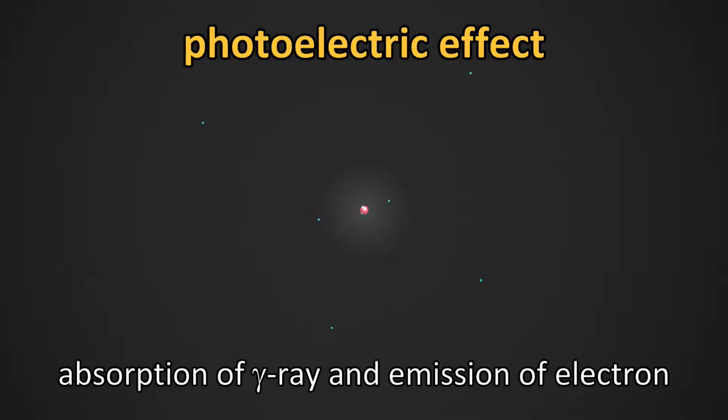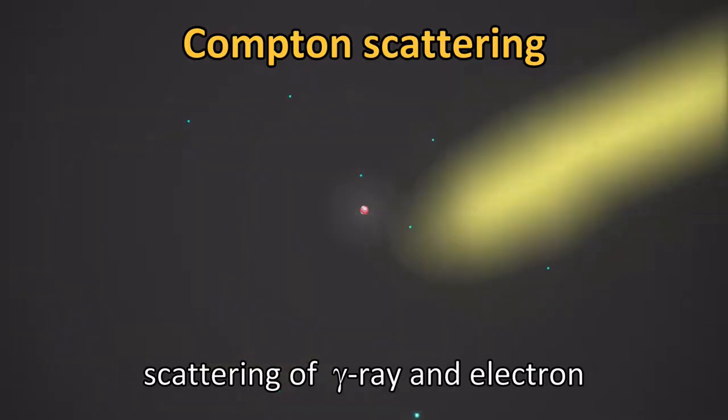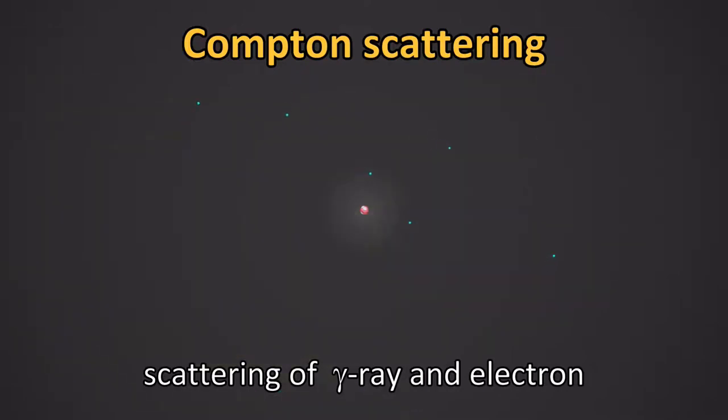The photoelectric effect is a phenomenon in which gamma rays are absorbed by atoms, causing electrons in the atoms to pop out. Compton scattering is the scattering of gamma rays and electrons. After a gamma ray hits an electron, it changes direction and the electron is ejected. The gamma ray loses some of its energy.